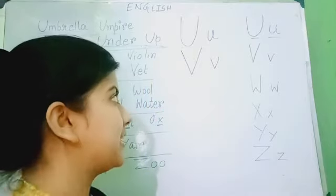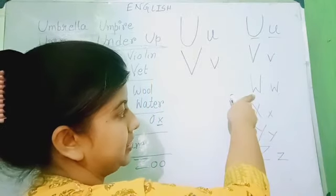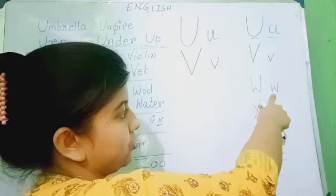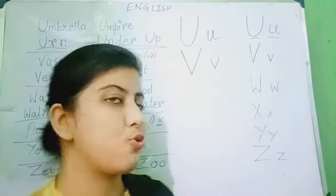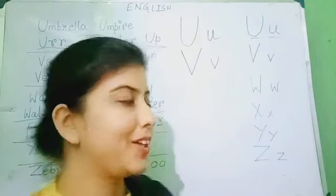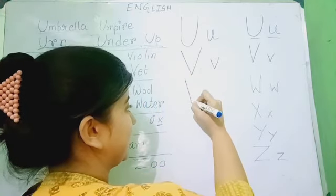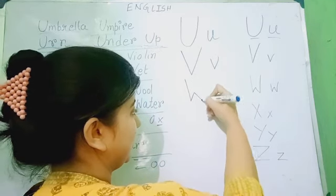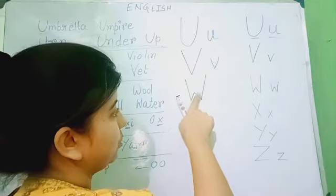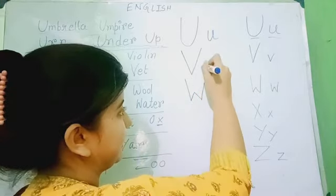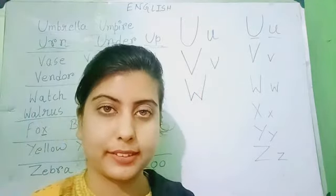Now, we will look at the next letter. That is W. This is capital W and this is small w. Let's try to write them. Capital W is made of four slanting lines — one, two, three, four — all connected together. That is capital W. And the small w is just like this but smaller. This is the small w.